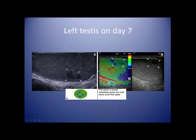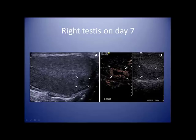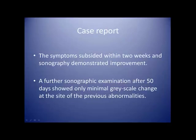Left testis re-scanned on day 7: the lesion is getting smaller, now almost completely green with some blue spots — still a soft lesion. Right testis on day 7: contrast administered, no internal vascularity, and the area which is hypo- to isoechoic on B-mode is enhancing, in keeping with a rim around the lesion. Symptoms subsided within 2 weeks and sonography demonstrated improvement. A further sonographic examination after 50 days showed only minimal grayscale change at the site of the previous abnormalities.